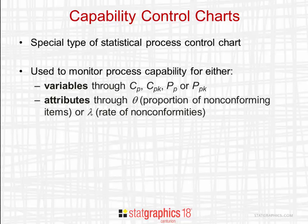They're used to monitor process capability for either variables through CP, CPK, PP, or PPK, or attributes through theta, the proportion of non-conforming items, or lambda, the rate of non-conformities.